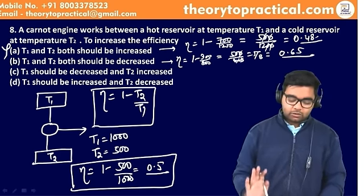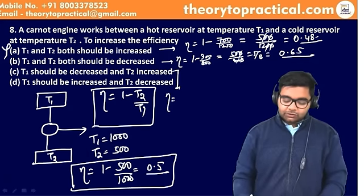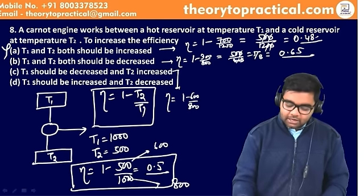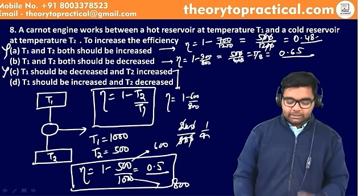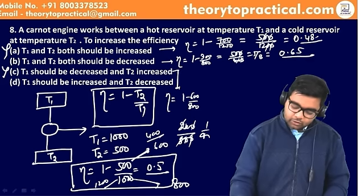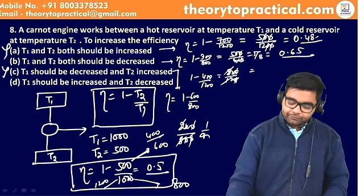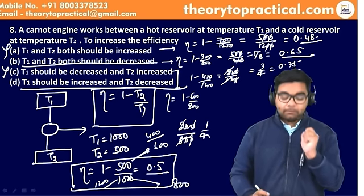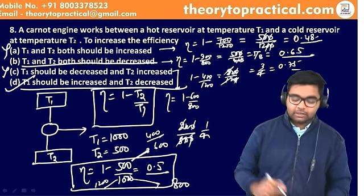Option 3: T1 decrease, T2 increase — T1 = 800, T2 = 600। Efficiency = 1 − 600/800 = 200/800 = 1/4 = 0.25, यह नहीं हो सकता। Option 4: T1 increase, T2 decrease — T1 = 1200, T2 = 400। Efficiency = 1 − 400/1200 = 800/1200 = 3/4 = 0.75। Both option B and option D are correct।